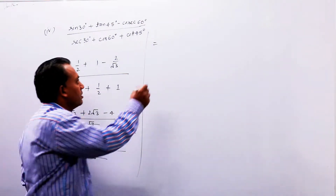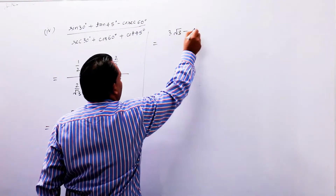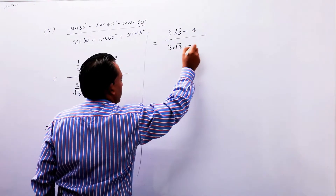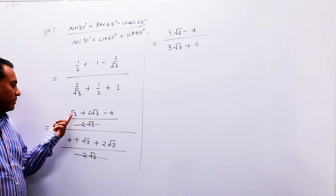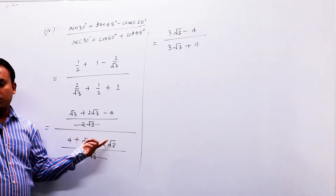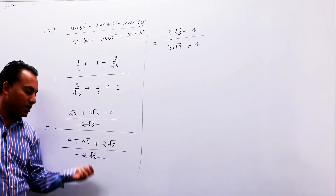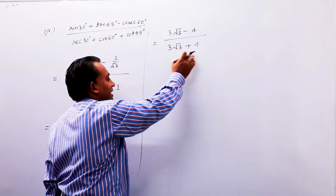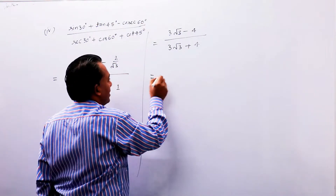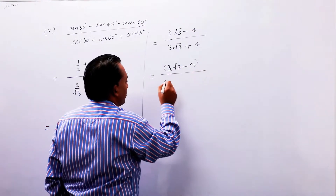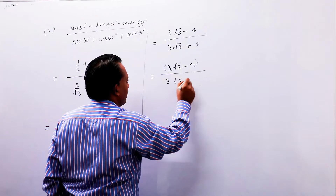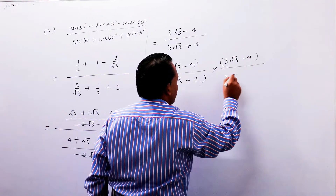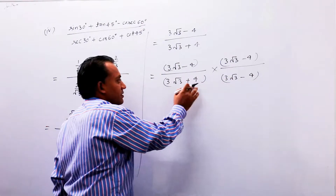यहाँ two times है तो हो जाएगा 3√3 minus 4 upon 3√3 plus 4। देखो भई, यहाँ one time है, यहाँ two times है तो हो जाएगा three times √3 plus 4। Denominator को rationalize करेंगे, तो rationalizing factor से multiply करने वाले हैं — यहाँ सिर्फ minus लेना है। यह हो जाएगा 3√3 minus 4 upon 3√3 plus 4 into 3√3 minus 4।